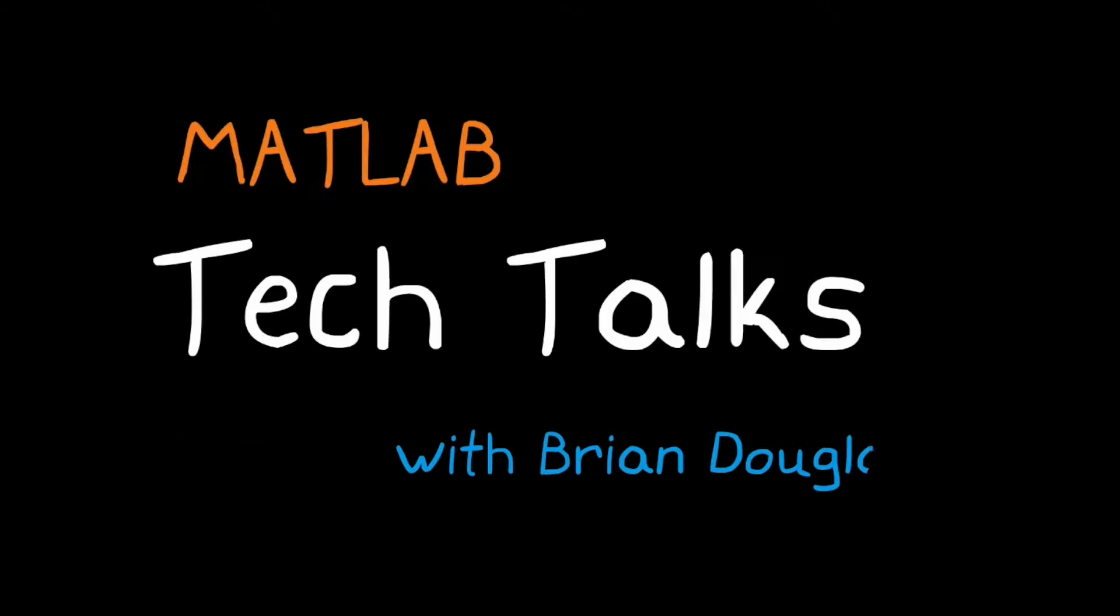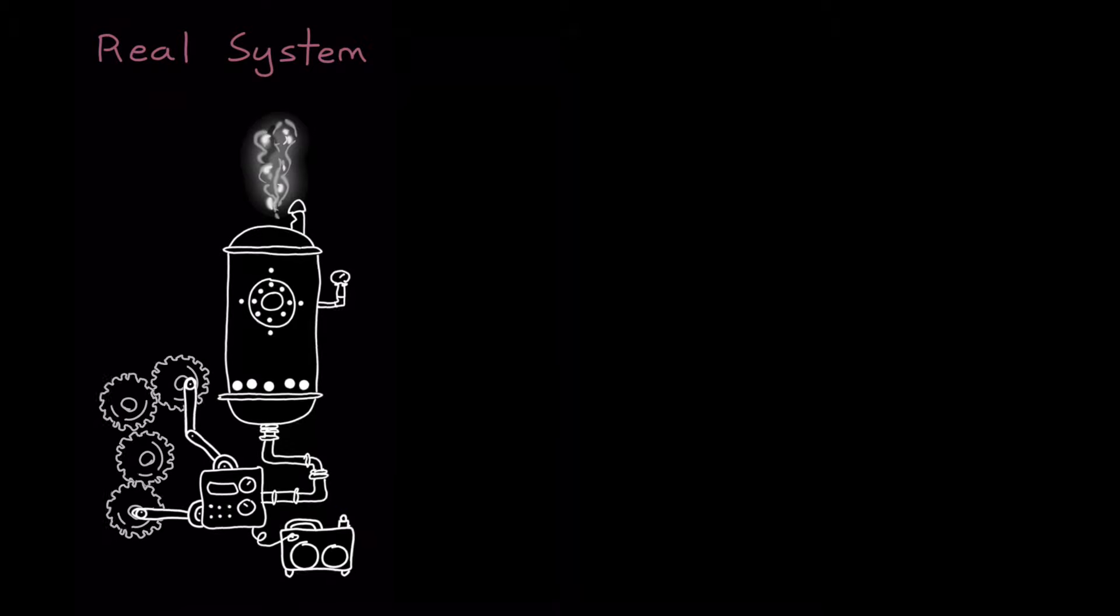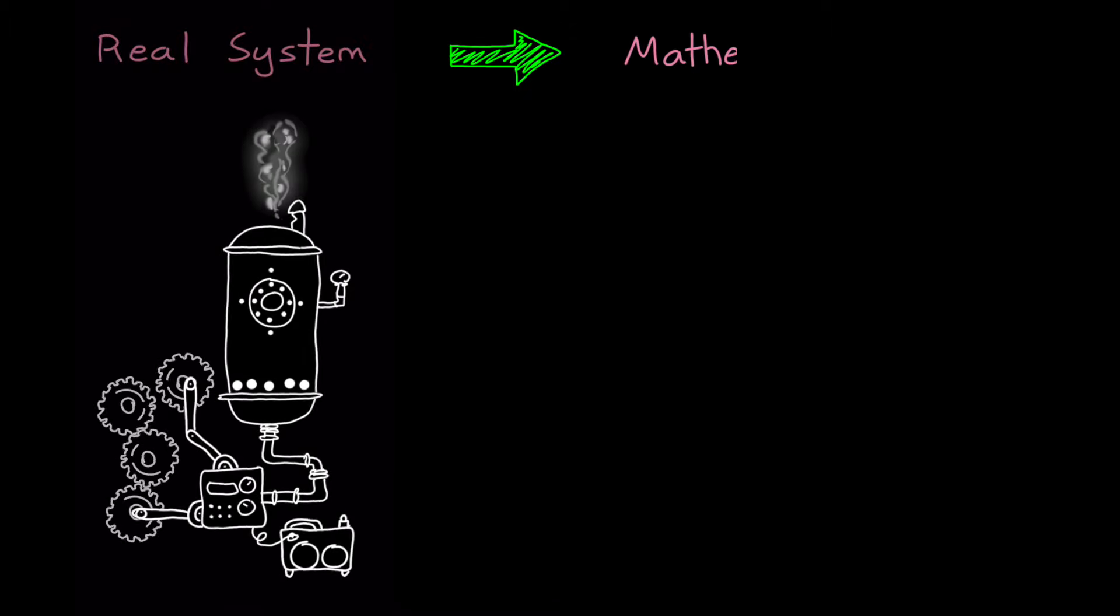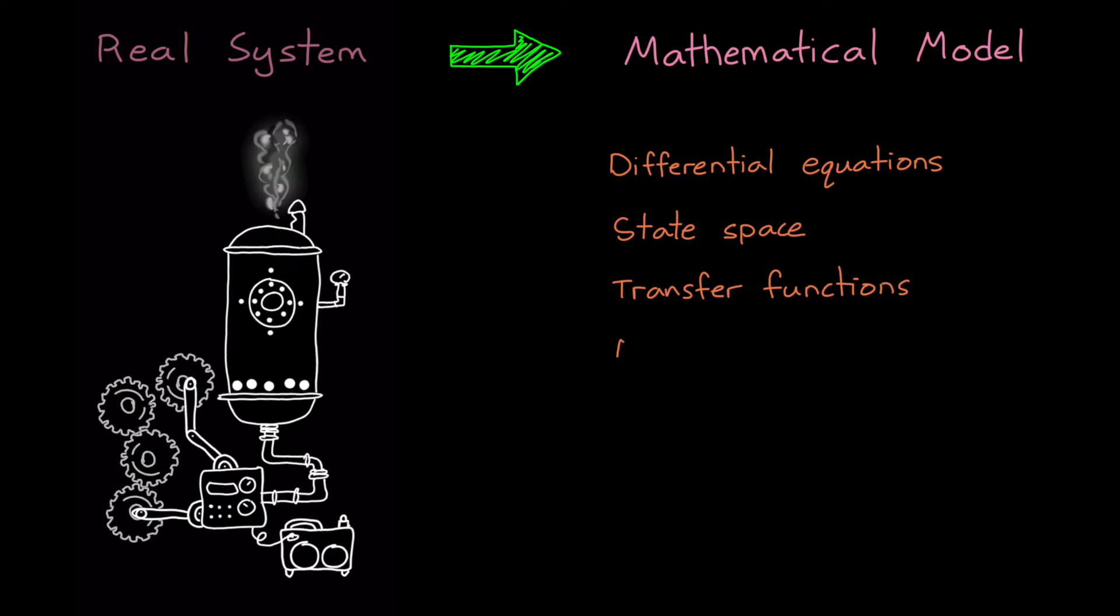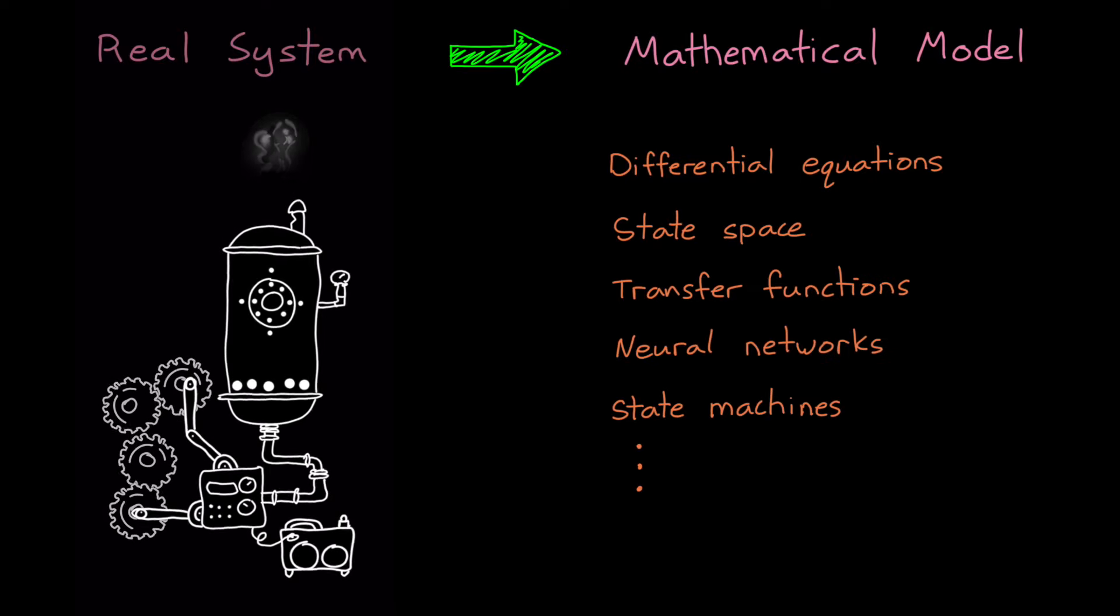I'm Brian, and welcome to a MATLAB Tech Talk. It's often helpful to represent real physical systems as mathematical models because models give us a way to systematically design, analyze, and simulate systems. And we have many different types of mathematical models to choose from, and each capture information in ways that are useful for different situations.